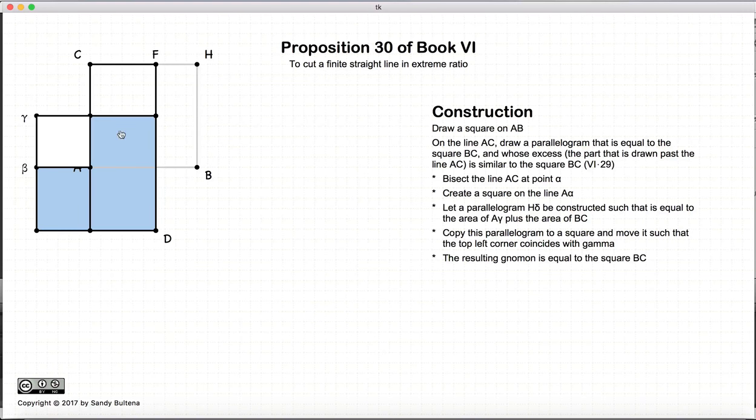This area here is equal to this area here because they are drawn on a line segment that has been bisected, so this area equals this area equals this area. So if we remove this one and add this one, the result will still be equal to the area of CB, and AD will be a square. So again this was all Proposition 29.